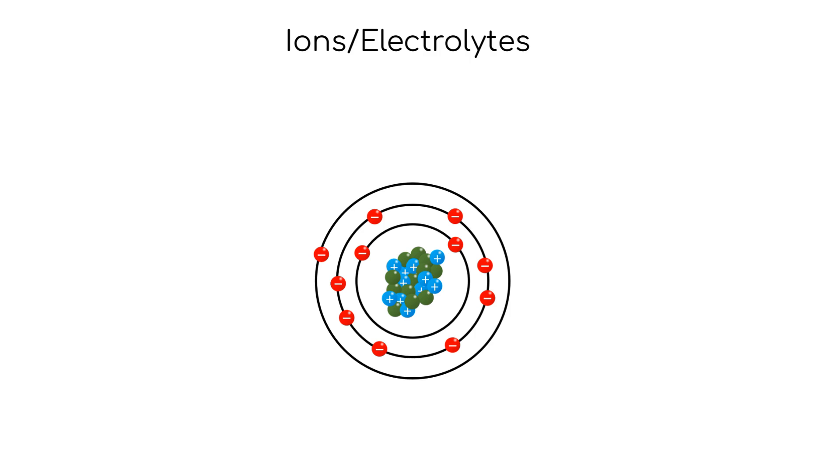Atoms with unequal numbers of electrons and protons are charged. Atoms with more electrons than protons carry a negative charge, while atoms with more protons than electrons carry a positive charge. These charged atoms are called ions or electrolytes.